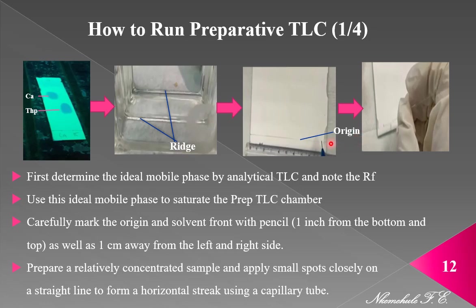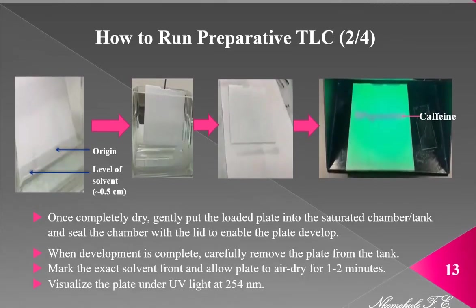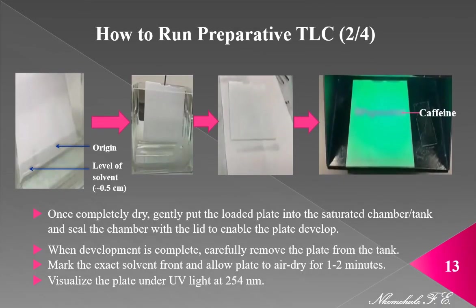After preparing the plate, you go ahead and load your samples. You prepare a relatively concentrated sample and apply small spots closely on a straight line to form a horizontal streak using a capillary tube. Once completely dry, gently put the loaded plate into the saturated tank and seal the chamber with the lid to enable the plate to develop. When the mobile phase has reached the solvent front, development is complete.